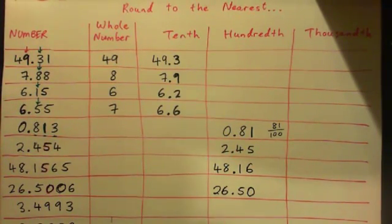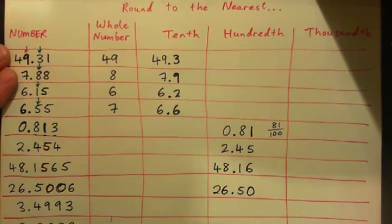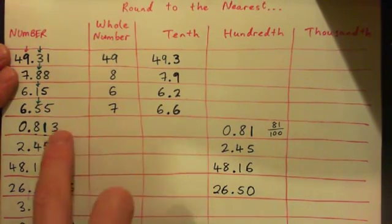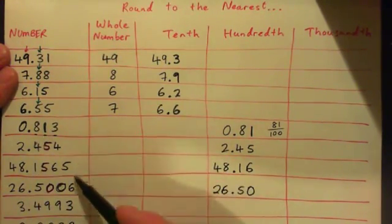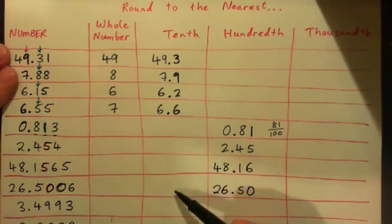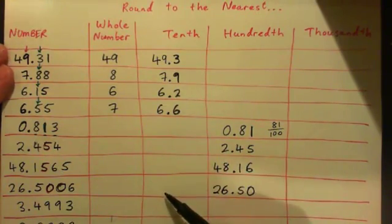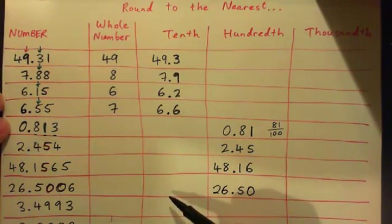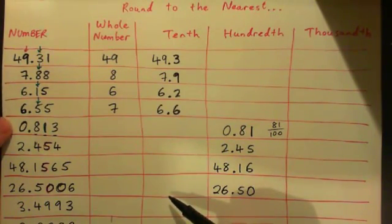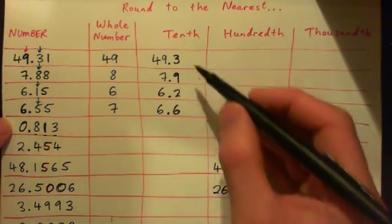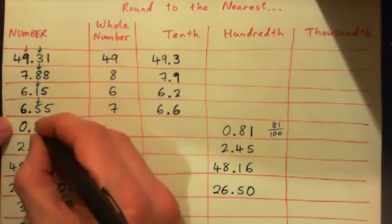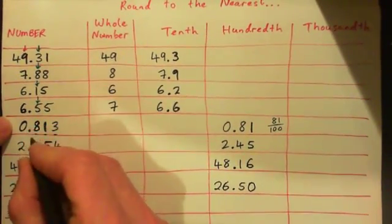Alright, so what should we do now? How about press pause and round these four numbers to the nearest tenth. Press pause and round all four numbers to the nearest tenth, and then check your answer with me. Okay, I'm going to do them really fast, so by all means press pause and do it. I'm going to do it to the nearest tenth.